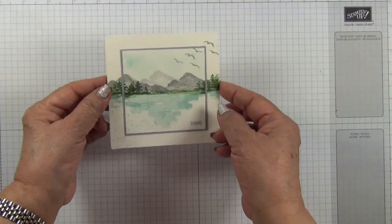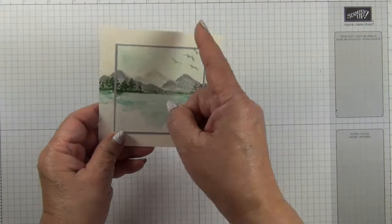This is a square card. The folded size measures four and one eighth by four and one eighth. In metric that's 10.5 by 10.5 centimeters.